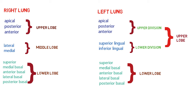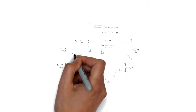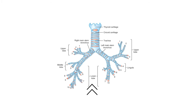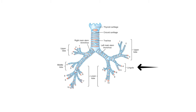Looking at the diagram, we have the trachea, then the right bronchus and left bronchus. In the right bronchus we have upper lobe, middle lobe, and lower lobe. In the left bronchus we have upper lobe and lower lobe, and in the lower segment of the upper lobe we have the lingula. This is all about bronchopulmonary segments.